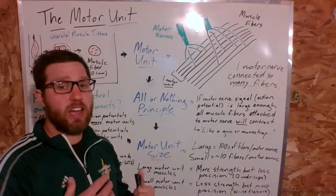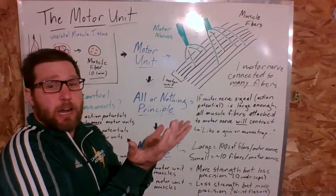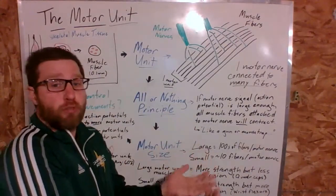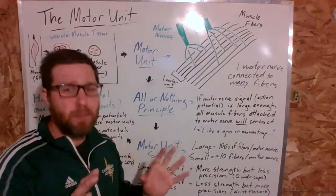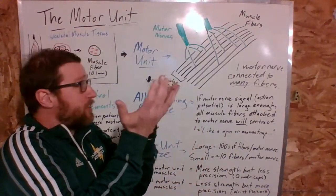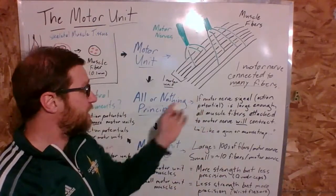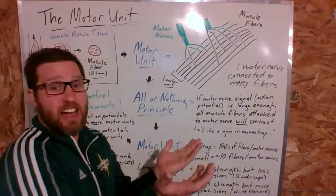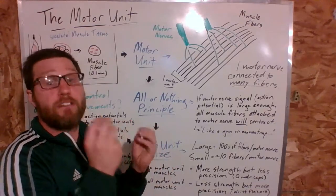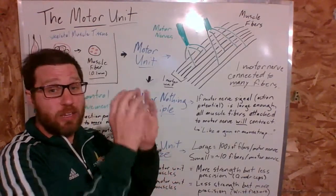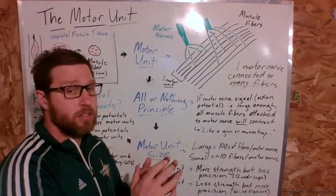When I pick something up very gently versus throwing a medicine ball as hard as I can, those two actions use the same muscles, but obviously the number of muscle fibers used is very different — and that's because of the all-or-none principle. It's not like I can only throw hard or not at all; it depends on the number of motor units we recruit. You either contract motor units or you don't — it's all or nothing.